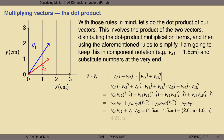Now I can plug in numbers. The x components of v1 and v2 are both 1.5 centimeters, so multiplied together that's 1.5 × 1.5. The y component of v1 is 2 centimeters and of v2 is 1 centimeter. Doing all the math, the final answer is that the dot product of v1 and v2 is 4.25 centimeters squared.